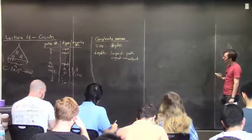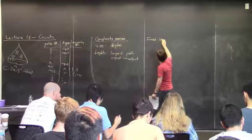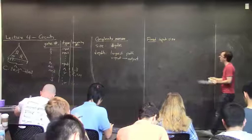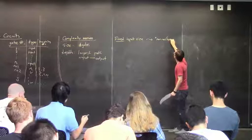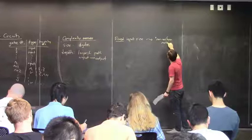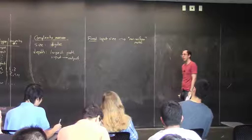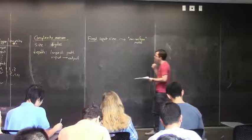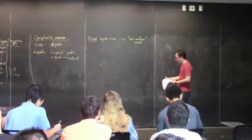The funny thing about circuits, in contrast to Turing machines or other models for algorithms, is that circuits have fixed input size. This is sometimes associated with the phrase non-uniform model of computation. When you hear that phrase, it means you have a different algorithm or a different object for each different input length, which is mildly weird. As such, one circuit cannot decide a language, because languages can have strings of any input length. The actual object that can decide a language is the circuit family.